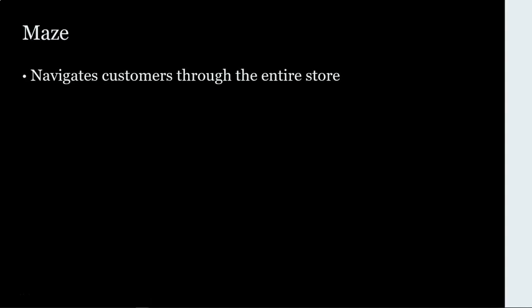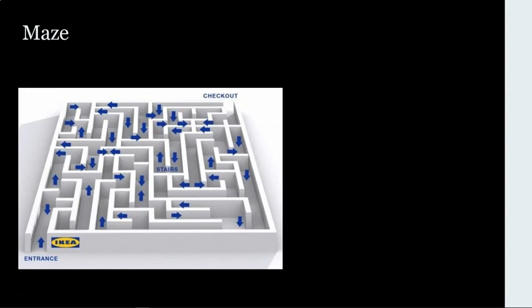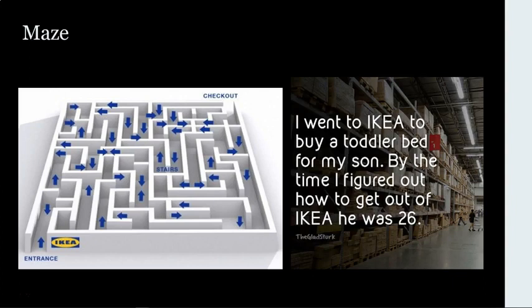The last layout is the maze layout. With the maze layout, the store is laid out in a maze. This is used when the retailer wants customers to wander through the store in a certain pattern and see a lot of merchandise. The maze layout is not overly common, but it's used in Ikea. When you go to Ikea, you're guided around the store with a main aisle and are able to see different departments. You can take shortcuts through the maze if you can find them; otherwise, you wander through looking at merchandise until you finally reach the end to select and purchase your items.